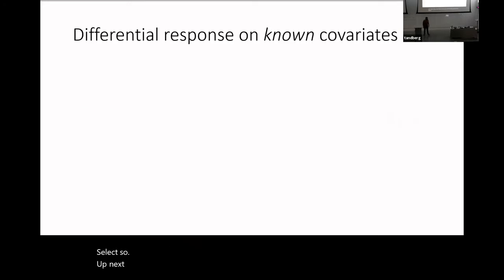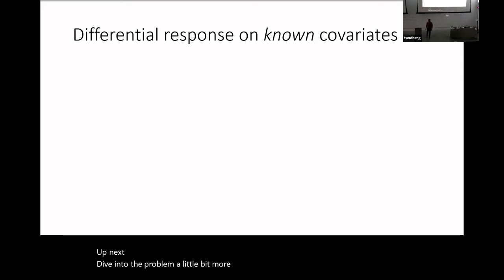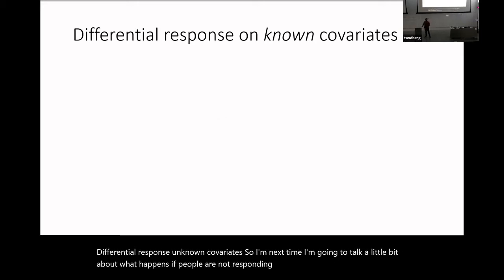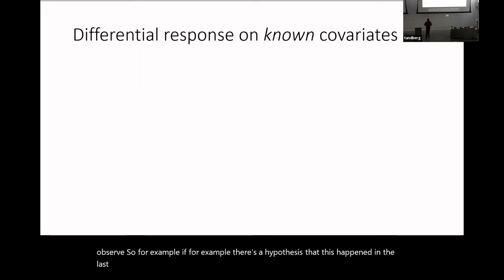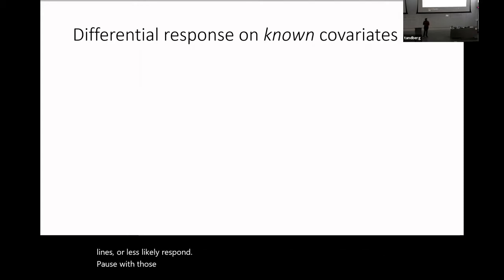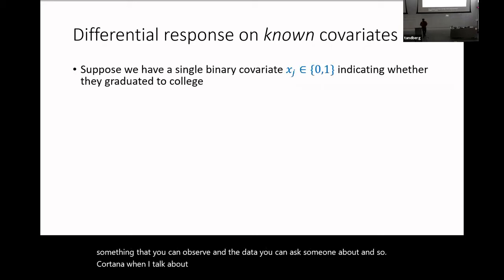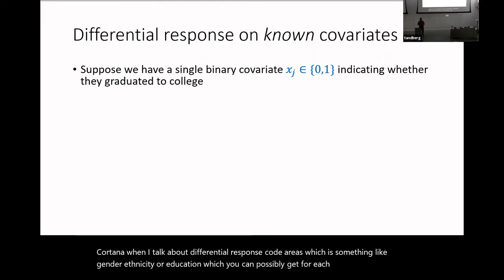We're only going to cover here differential non-response with known covariates. Next time I'll talk about what happens if people are not responding based on a covariate you don't observe — for example, there's a hypothesis that people with less social trust are less likely to respond to polls, and those people are also more likely to vote for Trump. Social trust is something you can't observe in the data. But today, we're talking about differential response on known covariates like gender, ethnicity, or education.